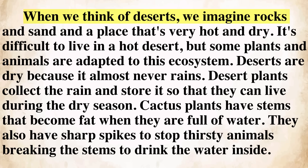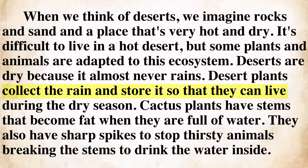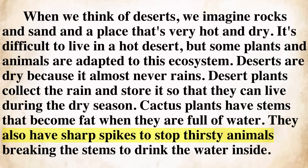Listen and practice. When we think of deserts, we imagine rocks and sand and a place that's very hot and dry. It's difficult to live in a hot desert, but some plants and animals are adapted to this ecosystem. Deserts are dry because it almost never rains. Desert plants collect the rain and store it so that they can live during the dry season. Cactus plants have stems that become fat when they are full of water. They also have sharp spikes to stop thirsty animals breaking the stems to drink the water inside.